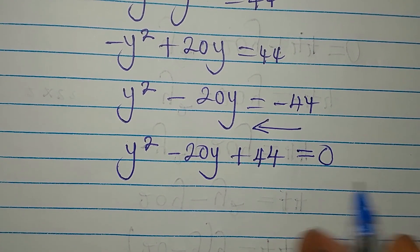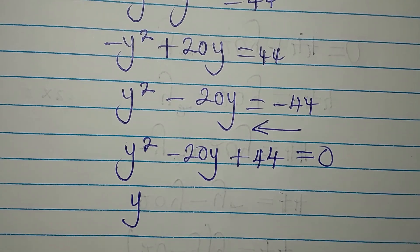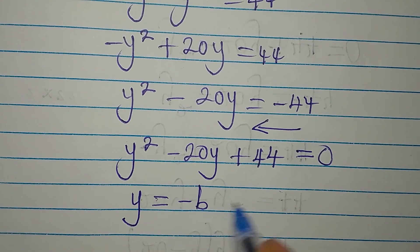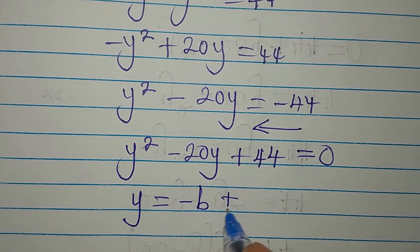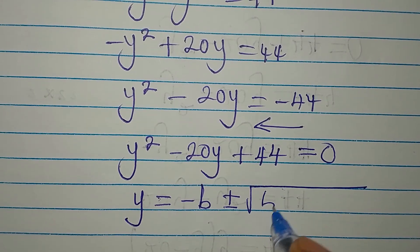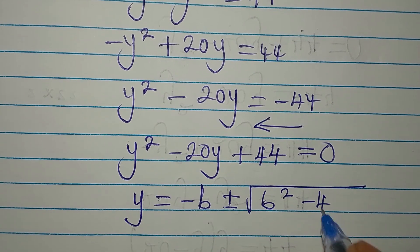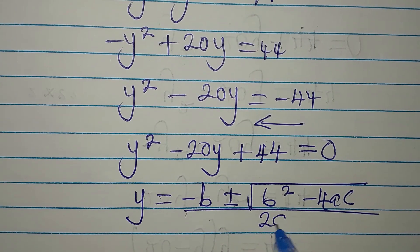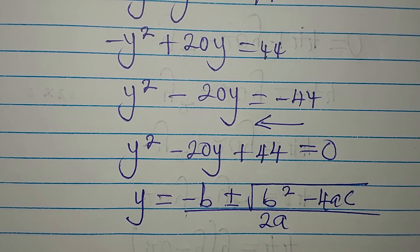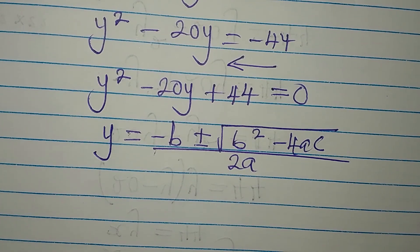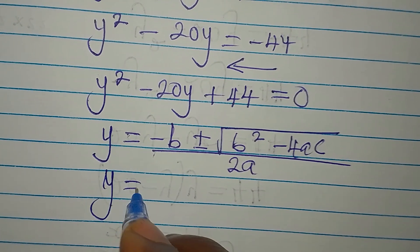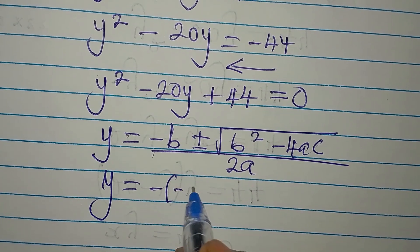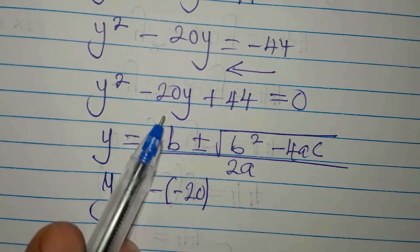At this point, do not worry about whether this can be factorized — go straight to the quadratic formula. y equals minus b plus or minus the square root of b squared minus 4ac, all over 2a.